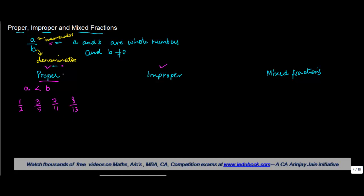All these are proper fractions. Why? Because in all these cases the value of the numerator A is less than B, the denominator: 1 is less than 2, 3 is less than 5, 7 is less than 11, and 8 is less than 13.